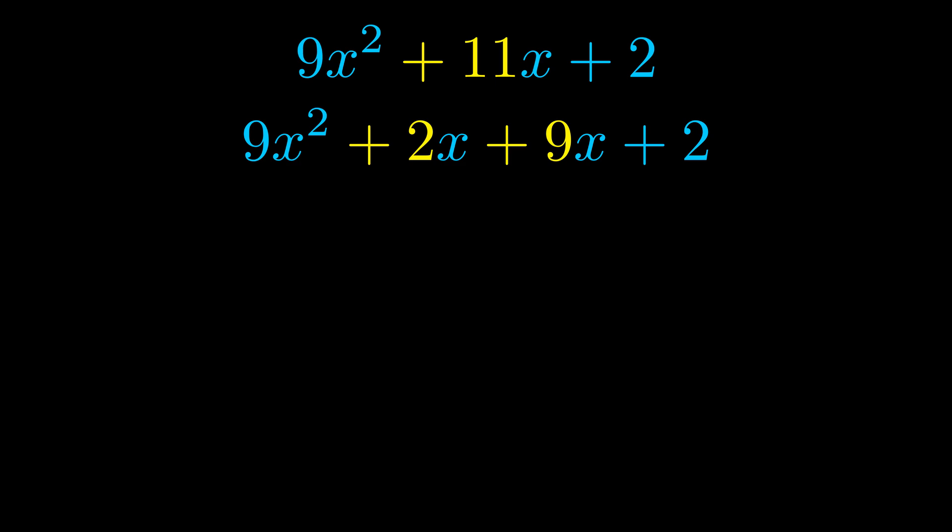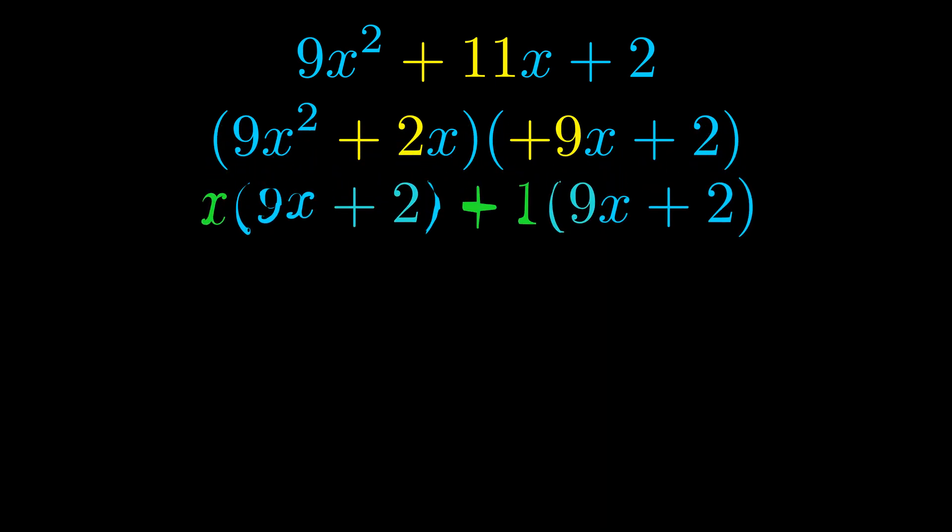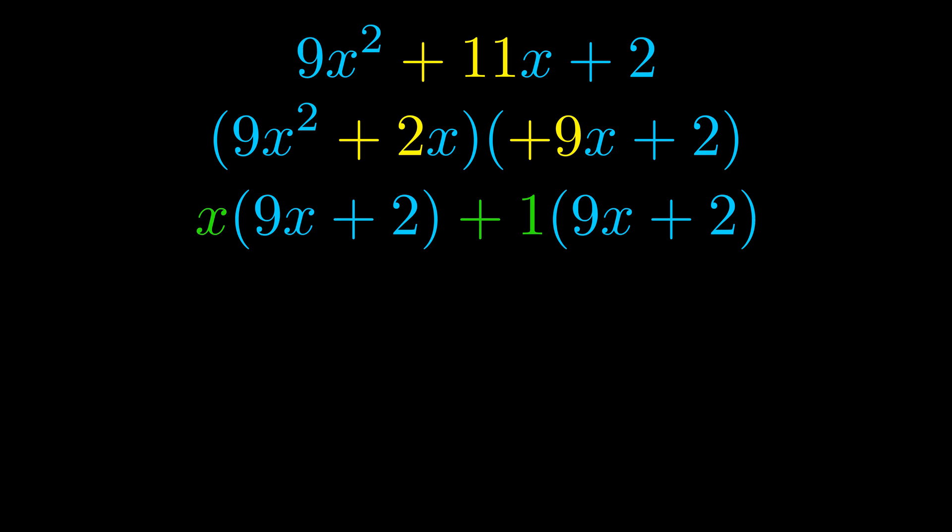Once we've done this we go ahead and put parentheses around the first term and the last term. And we do that so that we can take the greatest common factor out of both terms. We can see the greatest common factor is now outside in green. Notice also how what remains inside of the parentheses is the same in both cases. The blue values are the same. Those blue values will become one of our factors and we will combine the two green values, the GCFs that we pulled out, to get the other one. And that is our fully factored equation.